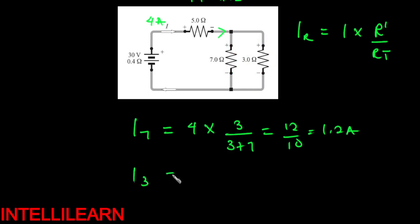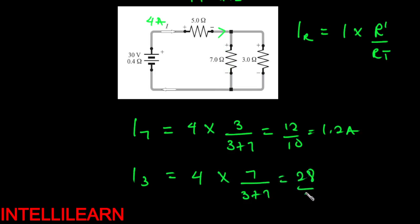And the current in the 3 ohm would be the incoming current — but I won't do the fraction of the 3 ohm; I will do the fraction of the other one, which is the 7 ohm. So 4 multiplied by 7 over (3 plus 7) gives 28 over 10, which is 2.8 amperes. That is the current in the 3 ohm resistor.